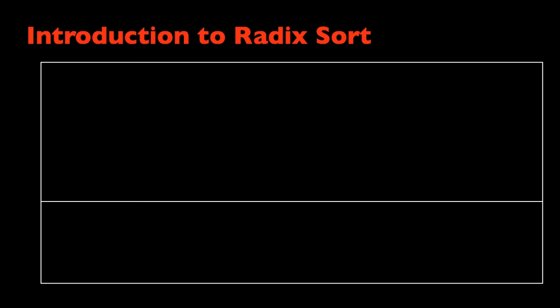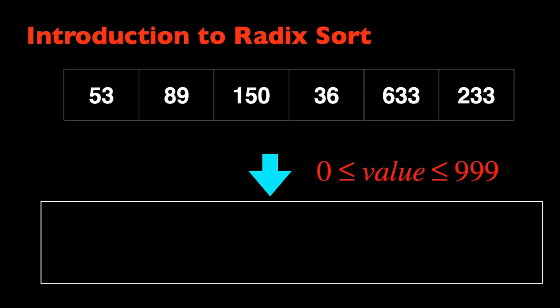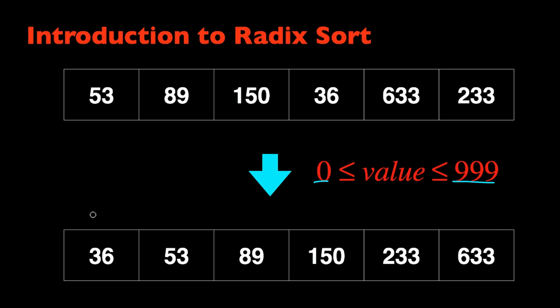Here's an introduction to radix sort. As an example, let's say we want to sort this array of six integers, each integer value ranging from 0 through 999, and we want to sort this array in ascending order so that the smallest number comes first.